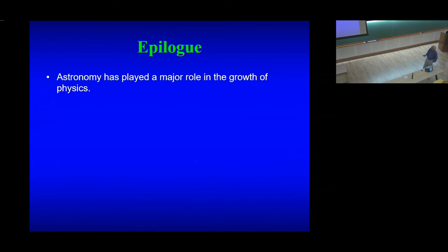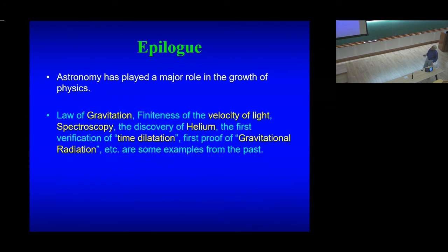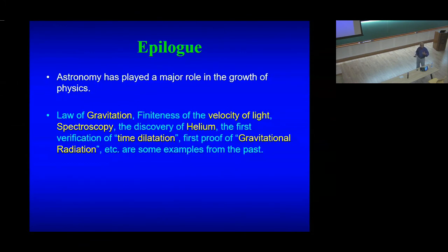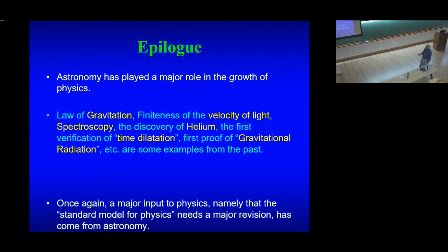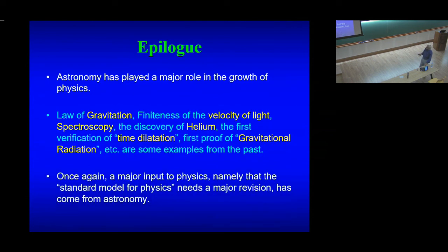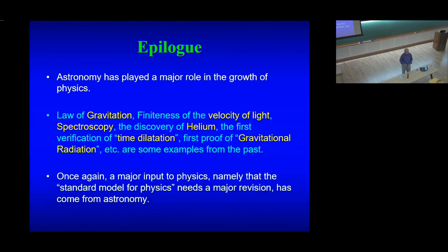We started asking why the sun shines. In August 1920, nearly a hundred years ago, Eddington answered it. It took us nearly a century to prove that Eddington was right. But in the process, we have discovered that fundamental physics needs a major revision. Astronomy has played a major role in the growth of physics: the laws of gravitation, the finiteness of the velocity of light, spectroscopy, the discovery of helium in the sun, the first verification of time dilation, the first proof of gravitational radiation — all are examples of fundamental revolutions in physics that occurred through astronomy. We find that once again, a major input into physics has come from astronomy: that the standard model of particle physics needs a major revision.